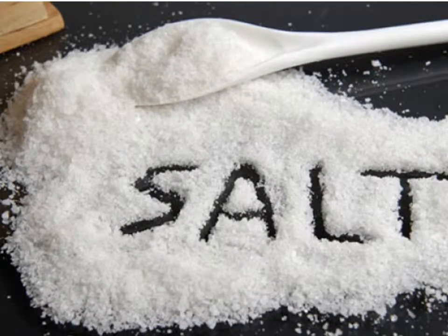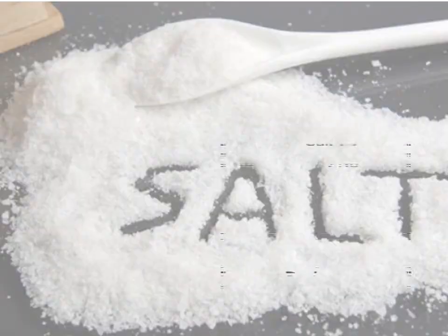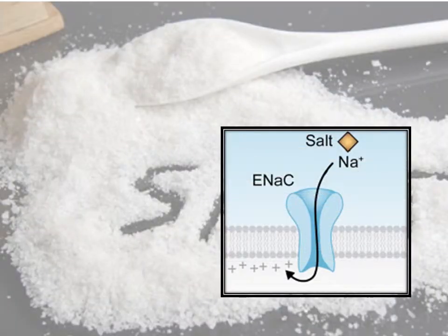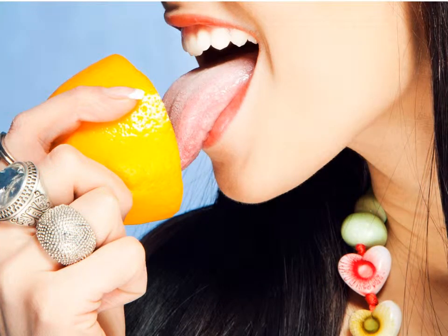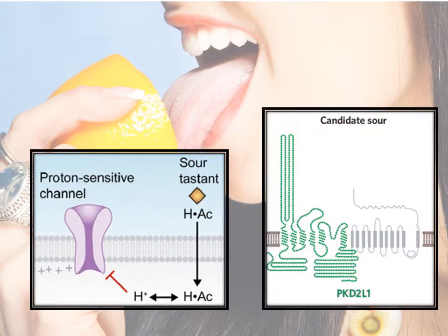Salt taste ensures the proper dietary electrolyte balance. It is basically the sodium channel on the taste receptor cells which triggers this signal. Sour warns against the intake of potentially noxious or poisonous chemicals. It is thought to be the proton-sensitive channel which recognizes pH change of the membrane and triggers the signal — so it is basically acids which trigger the sensation of sour.